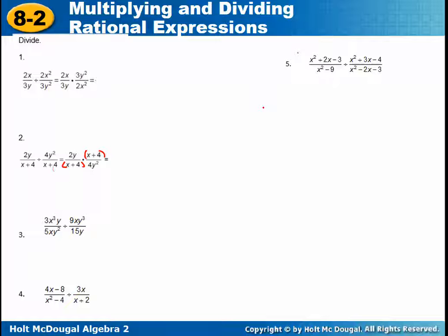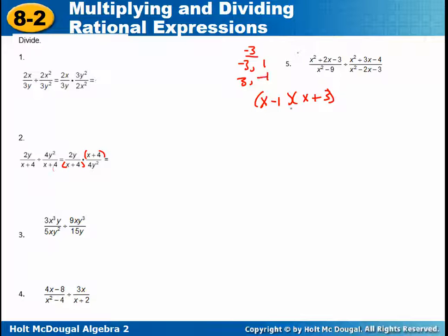Let's look at one of the tricky ones, number 5. We need to factor X squared plus 2X minus 3. That factors into (X minus 1)(X plus 3) — the factors of negative 3 that equal a positive 2 are 3 and negative 1. X squared minus 9 is a difference of squares: (X minus 3)(X plus 3). You might want to write these ones down on a list of how to factor certain ones that keep popping up over and over again.